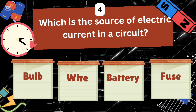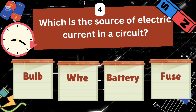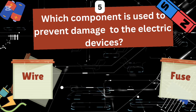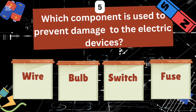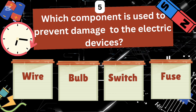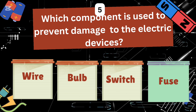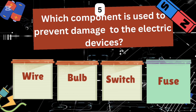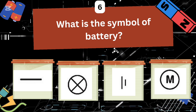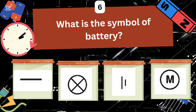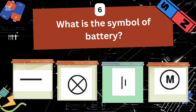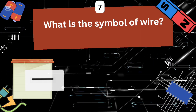Which is the source of electric current in a circuit: bulb, wire, battery, or fuse? The right answer is battery. Which component is used to prevent damage to electric devices: wire, bulb, switch, or fuse?